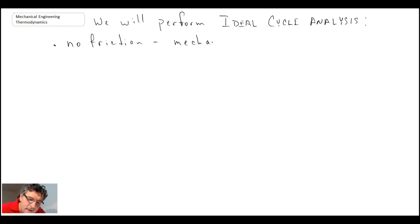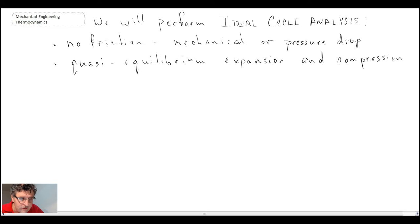First, we assume that there is no friction. By friction, I mean both mechanical friction within the moving parts of the engine, or fluid friction, which would be pressure drop as the working fluid moves throughout our engine. We're assuming that things are operating in a quasi-equilibrium manner, typically for our expansion and compression processes. Expansion is where you get the power; compression, you have to put the work in.